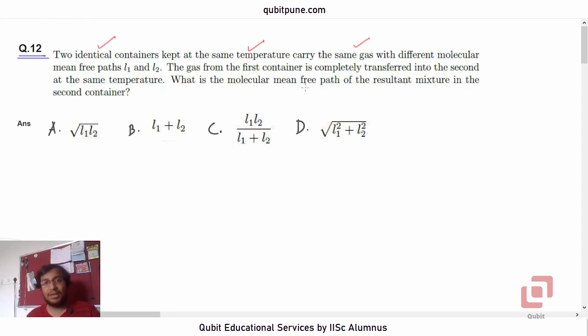The gas from the first container is completely transferred into the second at the same temperature. What is the molecular mean-free path of the resultant mixture in the second container?